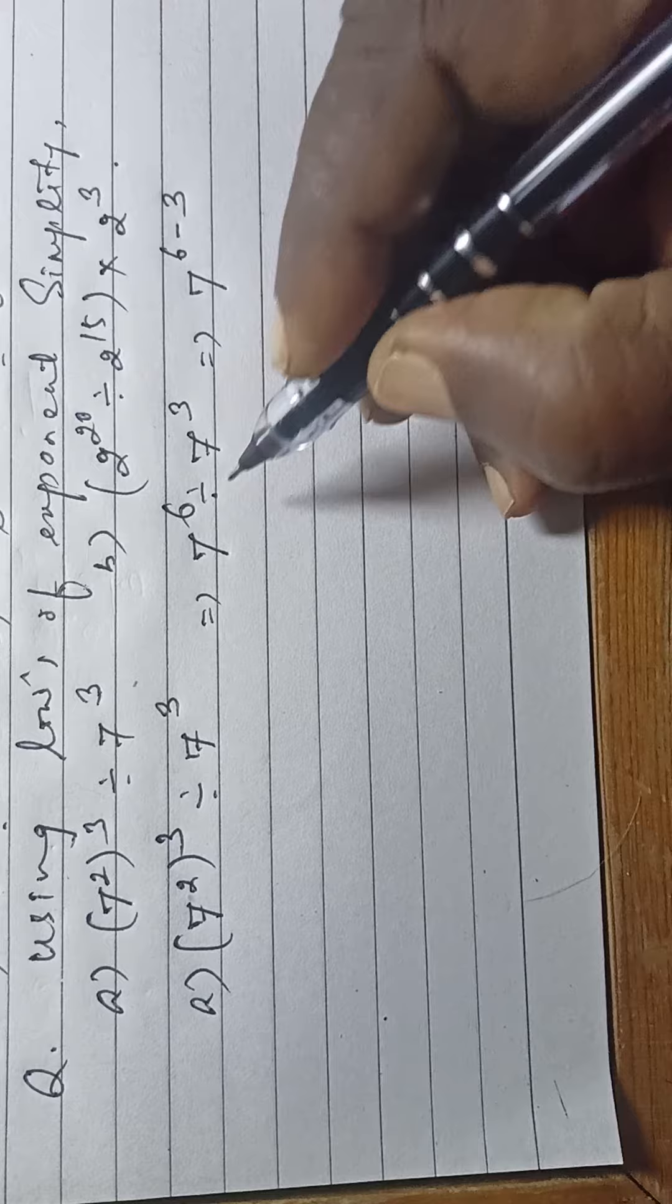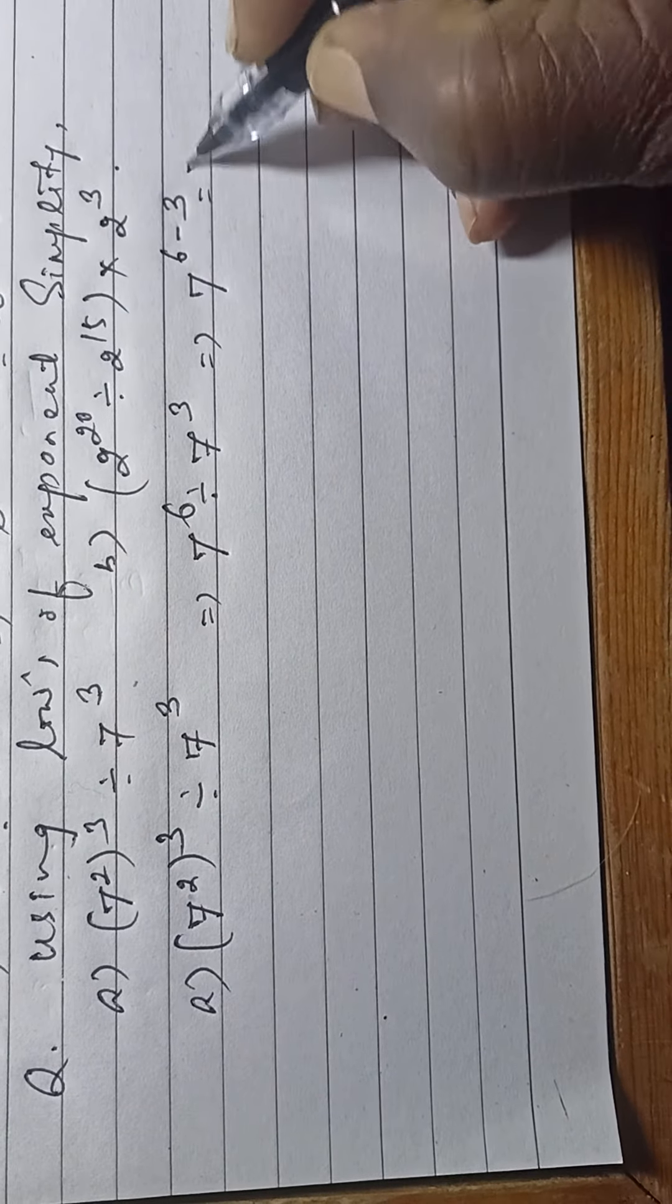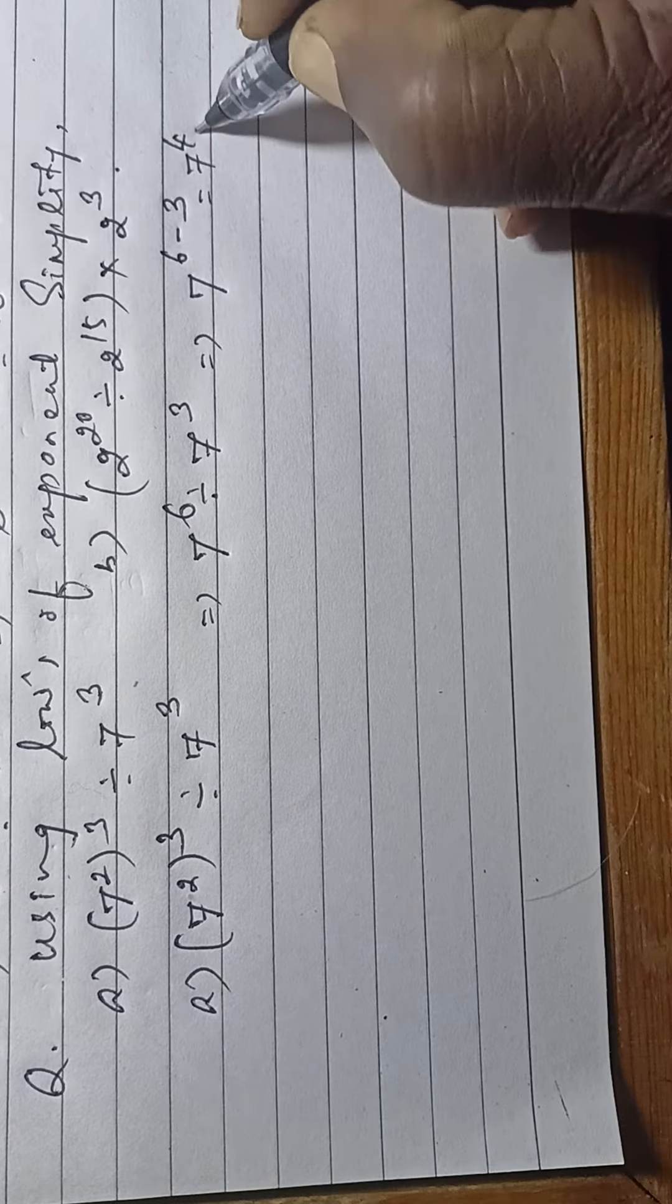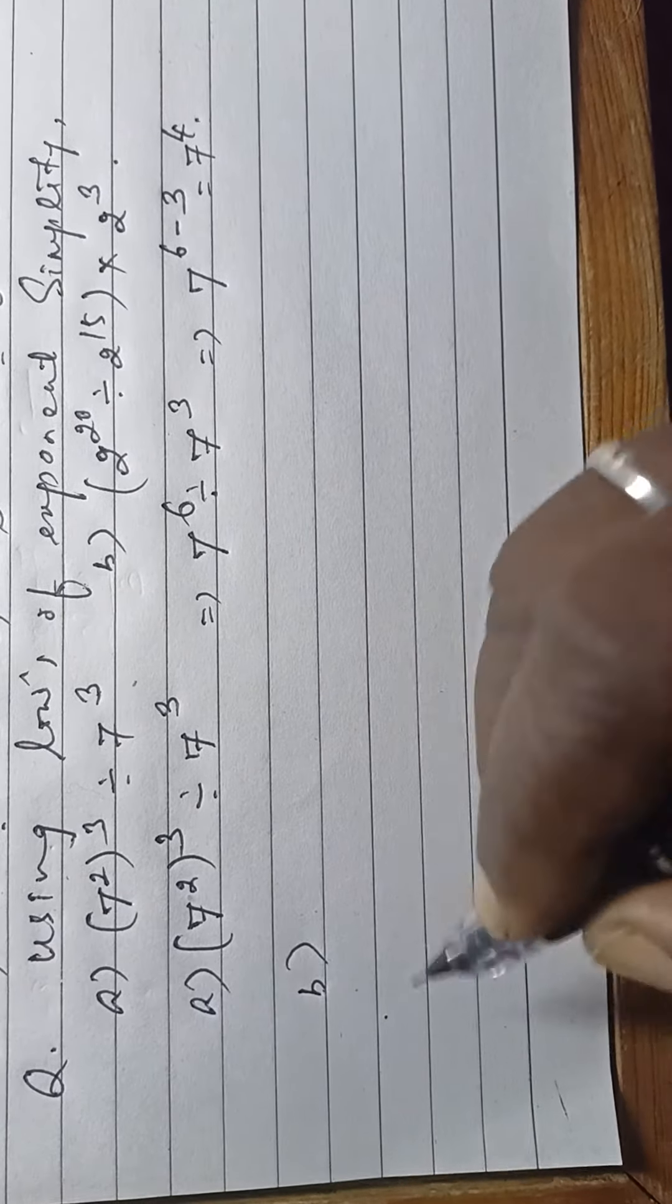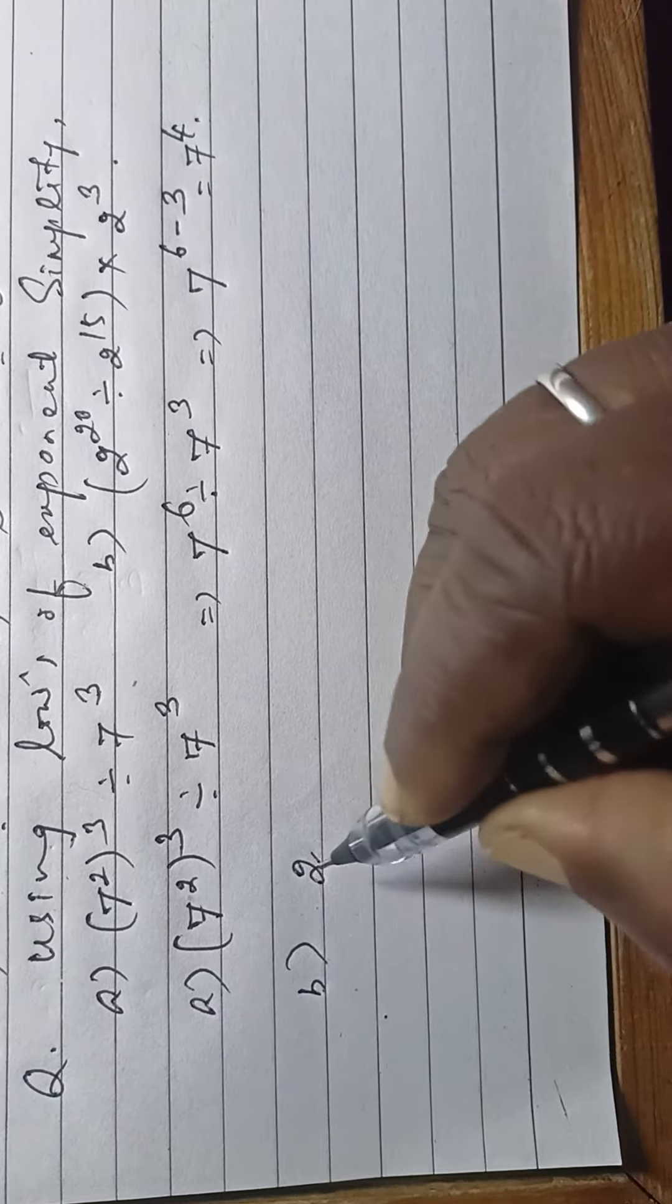Because we have division, 7 to the power 4 is the answer. For part (b): 2 to the power 20 divided by 2 to the power 15, in brackets, times 2 to the power 3.